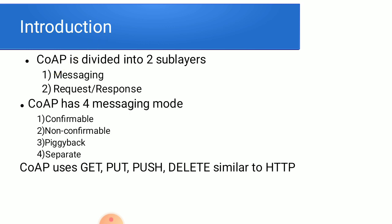CoAP is divided into two sub-layers: messaging, and request and response model. CoAP has four messaging modes: confirmable, non-confirmable, piggyback, and separate. CoAP uses GET, POST, PUT, and DELETE methods, similar to the HTTP protocol.